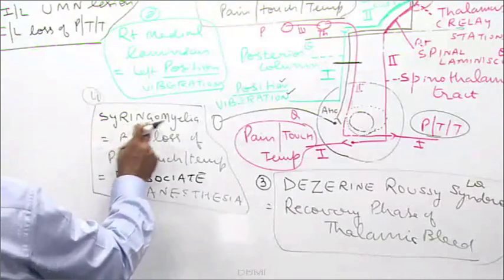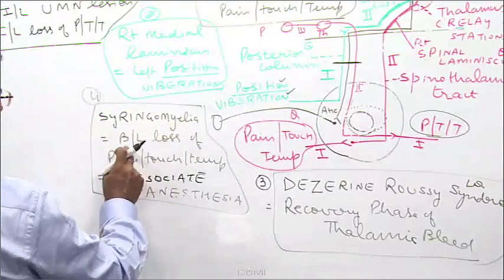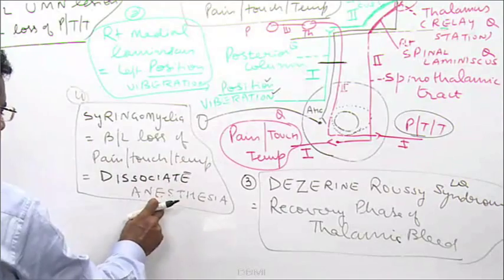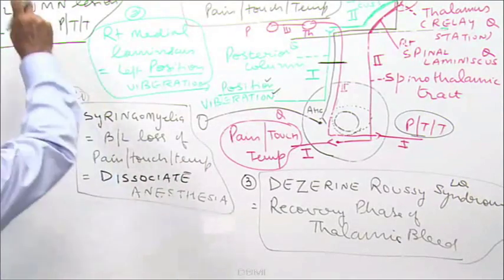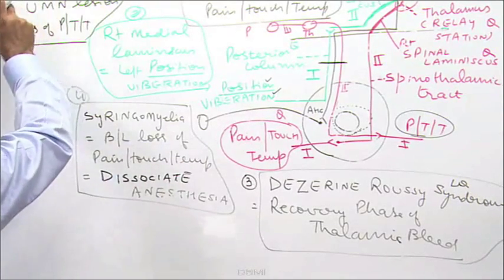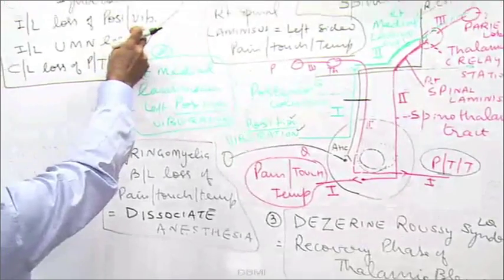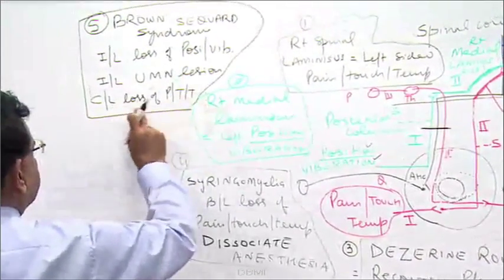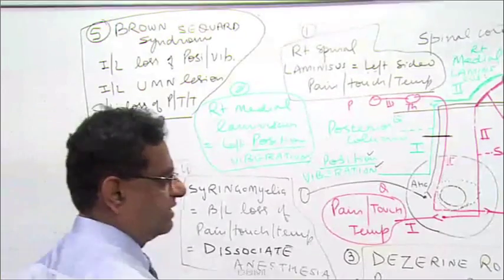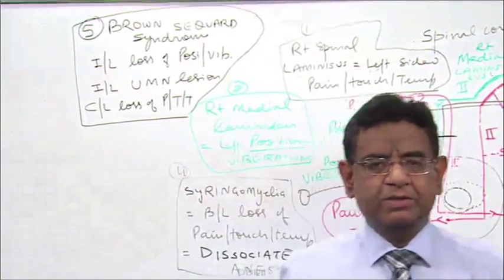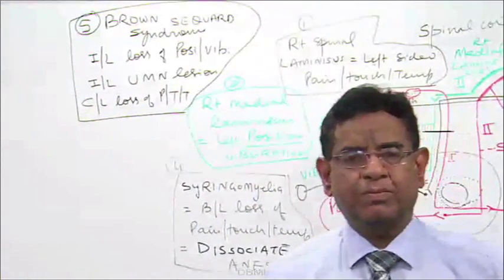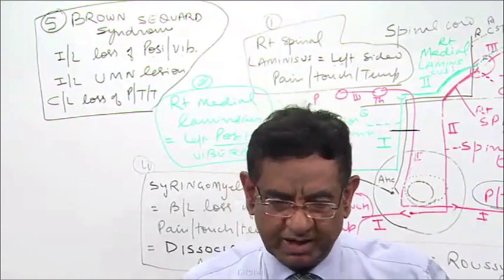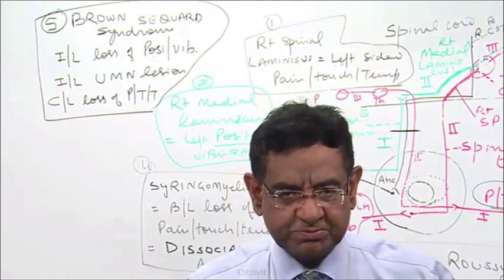Box 4: in syringomyelia, bilateral loss of pain and temperature — so-called dissociated anaesthesia. And Brown-Séquard syndrome: ipsilateral loss of position and vibration, ipsilateral upper motor neuron lesion, contralateral loss of pain, touch and temperature. This is all about what you have to learn about the lesions related to spinal cord.